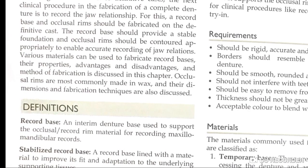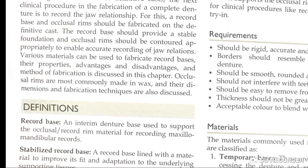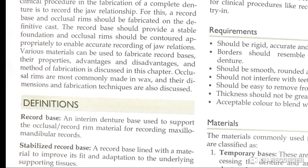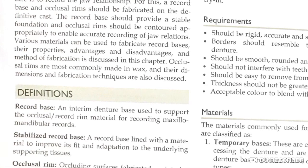The record base needs a stable foundation. We need a contour so that we can record the relationship. We can use many materials to fabricate the basis. The properties, advantages and disadvantages are discussed. The occlusal trims are wax, and the dimensions and fabrication techniques are discussed.